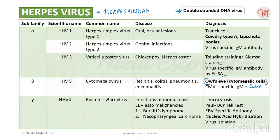Burkitt's lymphoma usually occurs in Africa and New Guinea. Another associated malignancy is nasopharyngeal carcinoma, which is usually found in males of Chinese origin.